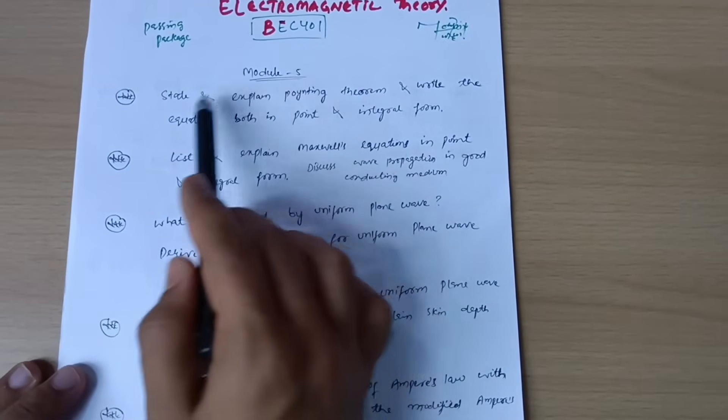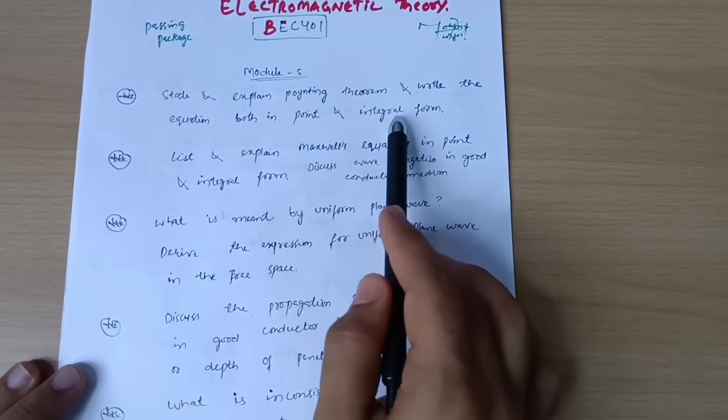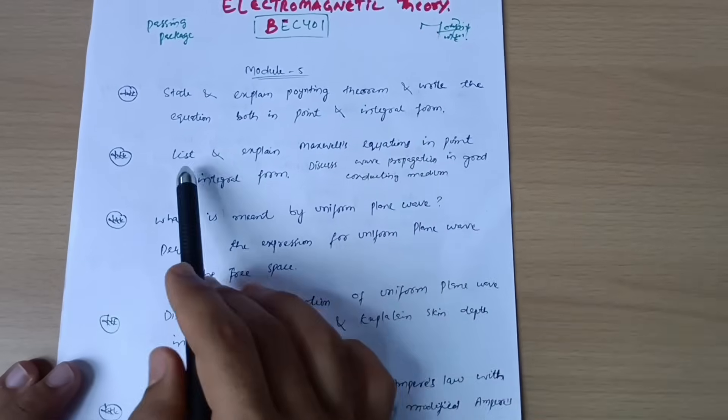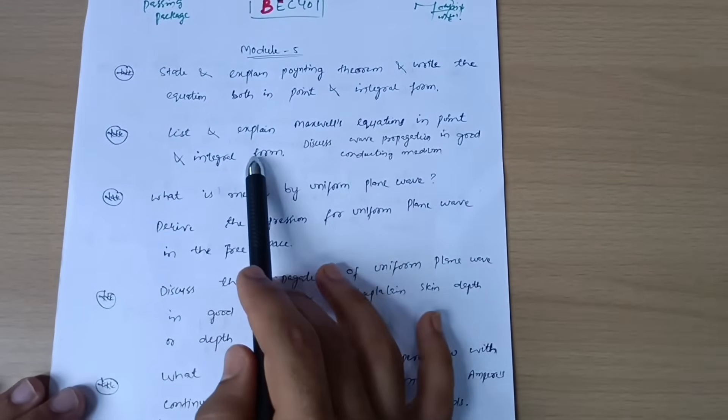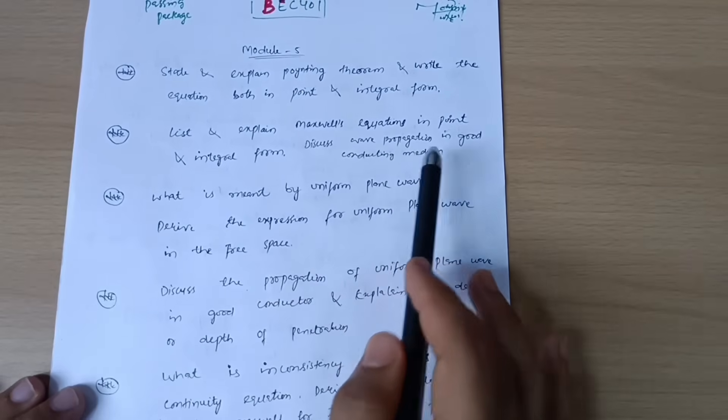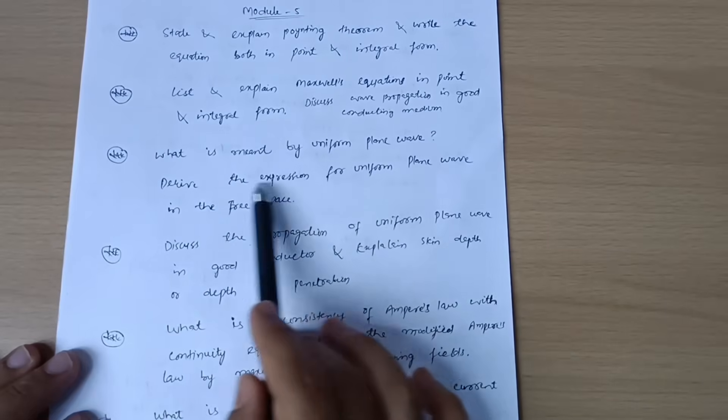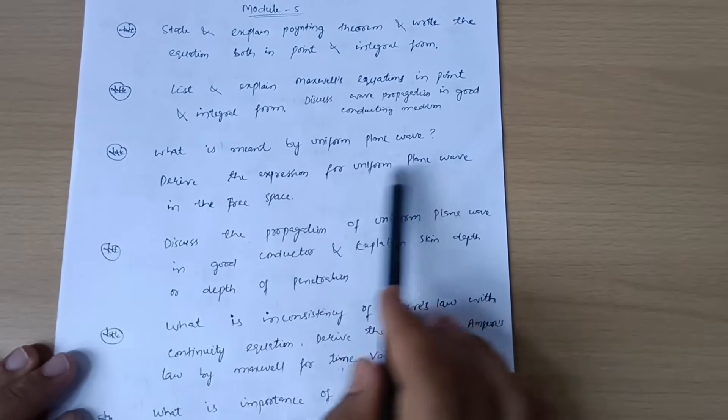Module five: State and explain Poynting theorem and write the equation both in point and integral form. List and explain Maxwell's equations in point and integral form. Discuss wave propagation in good conducting medium.